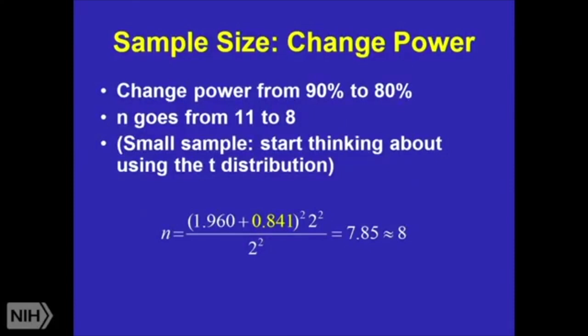So, let's say my power. Before, I wanted a power of 90%. Now, I want 80%. Oops. I'm sorry. I had the wrong Z there before. My sample size goes from 11 to 8. Again, I need to be thinking T distribution, not Z distribution. But this value in the numerator just got smaller because my power got smaller. If your power you're interested in is lowered, your sample size that's necessary is lowered.